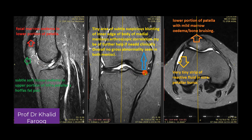Here we have a very subtle suspicious finding in the shape of blunting of the inner edge of the body of the medial meniscus. We need to confirm this with clinical examination to rule out any associated history of locking. If there is an associated history of locking, then arthroscopy would be of further help for the assessment of a tear in the medial edge of the body of the medial meniscus.